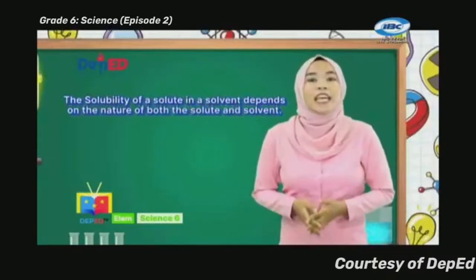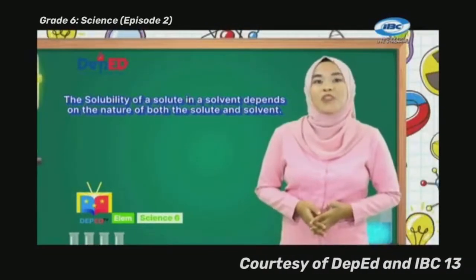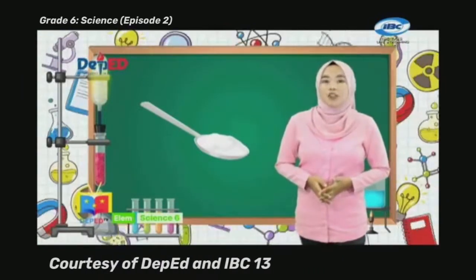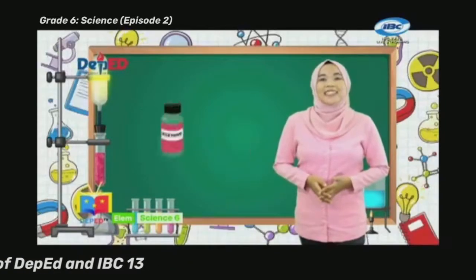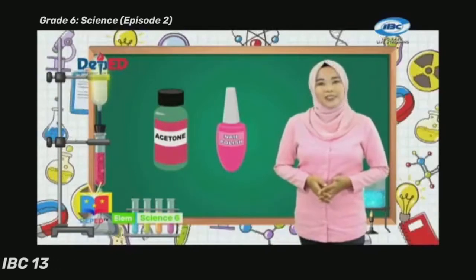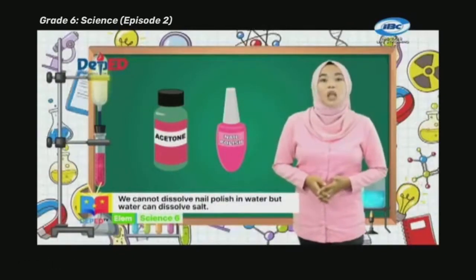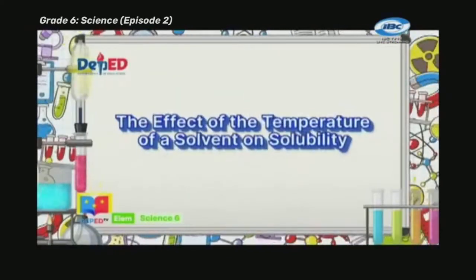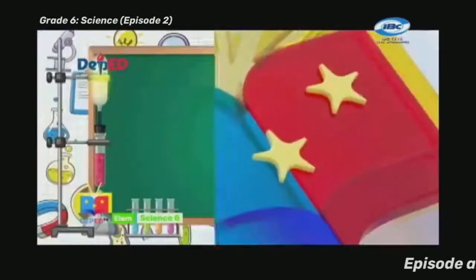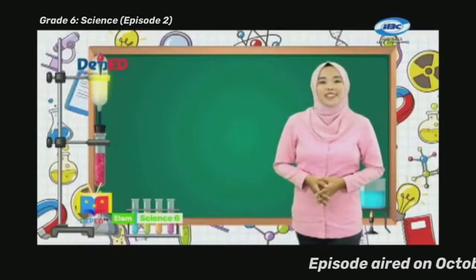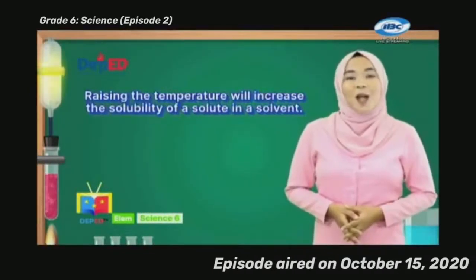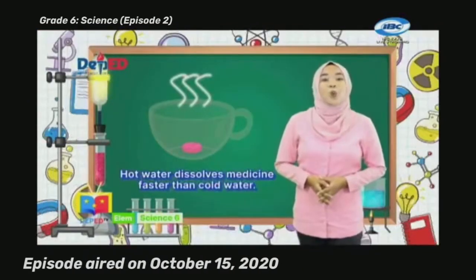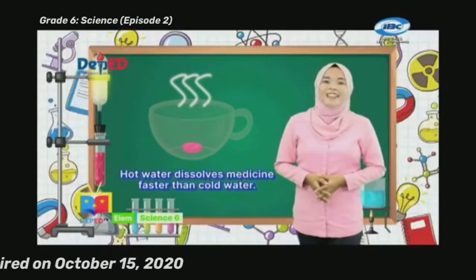The solubility of a solute in a solvent depends on the nature of both the solute and solvent. For example, salt dissolves in water, while nail polish dissolves in acetone — we cannot dissolve nail polish in water, but water can dissolve salt. Regarding temperature: raising the temperature will increase the solubility of a solute in a solvent. For example, hot water dissolves medicine faster than cold water.